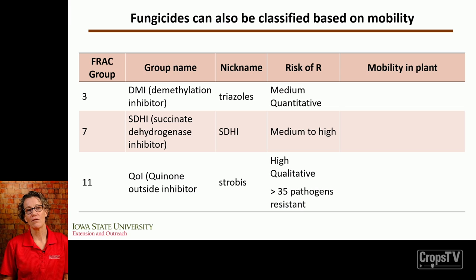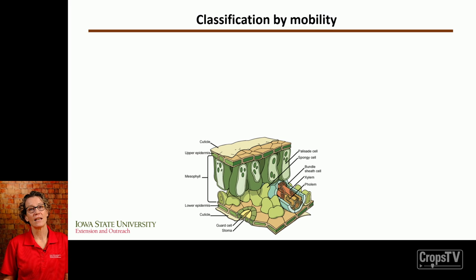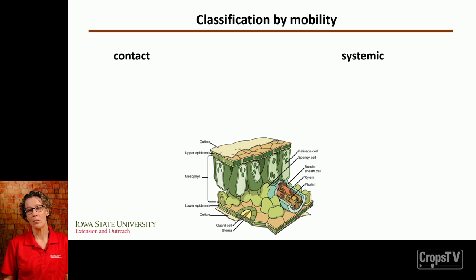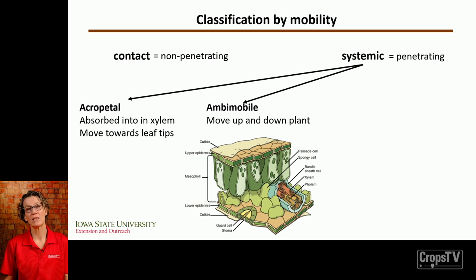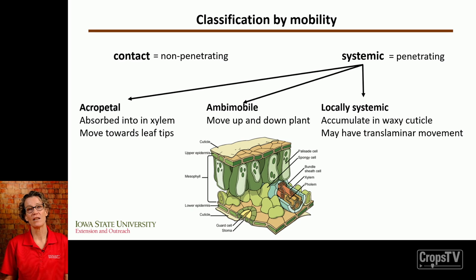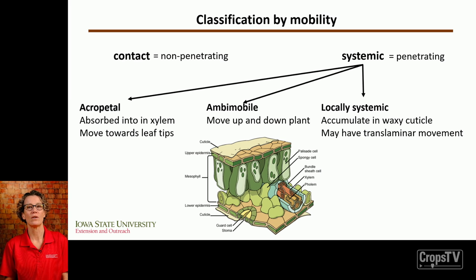Fungicides can also be classified based on their mobility in the plant. A fungicide can be a contact fungicide or a systemic fungicide — though 'systemic' can be misleading since fungicides are not systemic like herbicides. Better terms may be non-penetrating and penetrating. Penetrating fungicides can be acropetal — absorbed into the xylem and moving toward the leaf tips — ambimobile, meaning moving up and down the plant, or locally systemic, accumulating in the waxy cuticle.